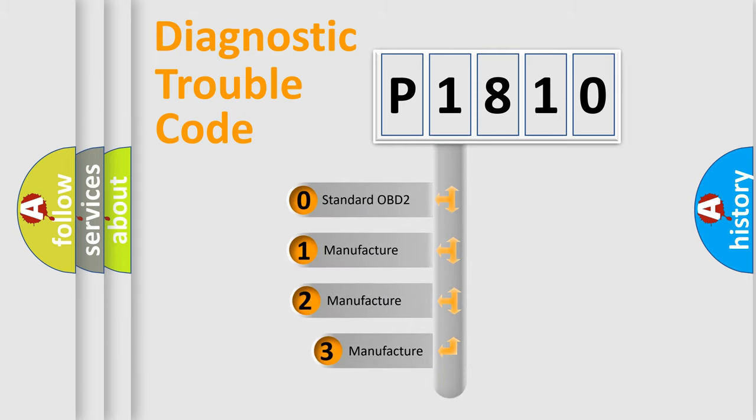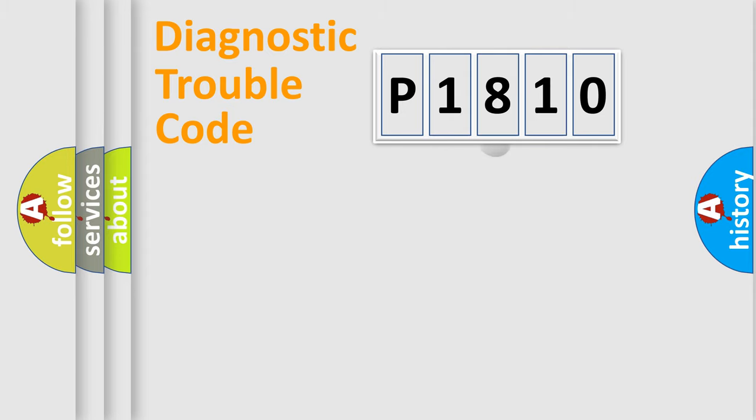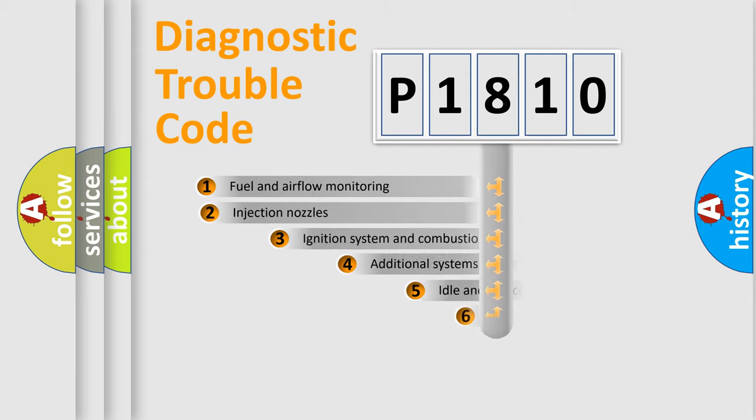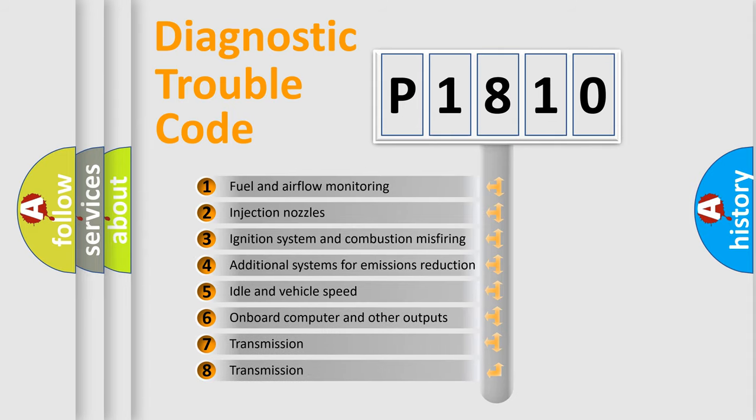If the second character is expressed as zero, it is a standardized error. In the case of numbers 1, 2, 3, it is a more specific expression of the car-specific error. The third character specifies a subset of errors.